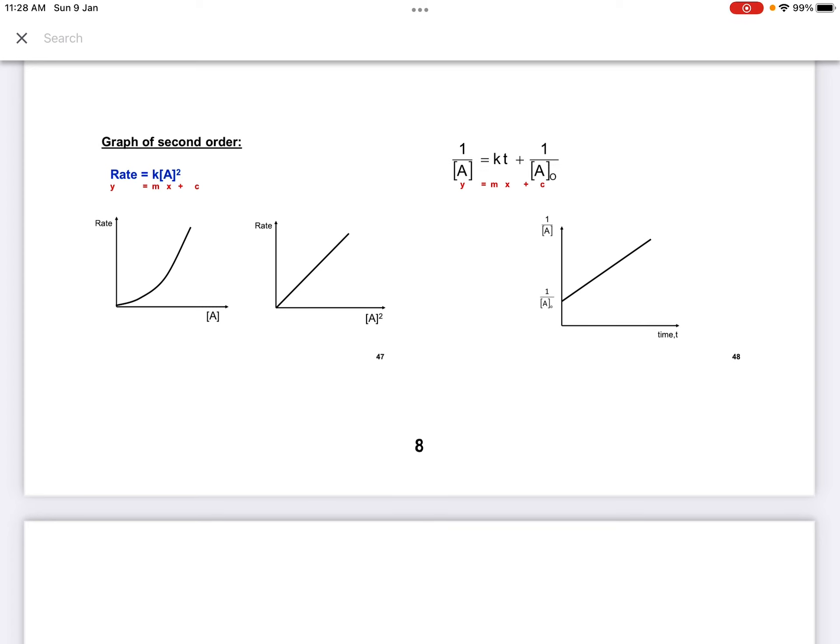In the graph for second-order, if we plot rate versus concentration, then we get a curve. Y equals to Mx plus C. In comparison, you get a curve mathematically. Or you also can plot rate versus A power 2, which we get a linear Y equals to Mx plus C.